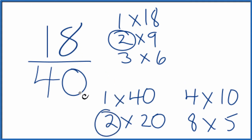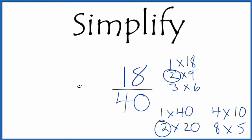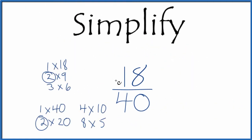So we'll divide 18 by 2 and 40 by 2, and we'll have simplified 18 fortieths. Let's move these over here. 18 divided by 2 equals 9.